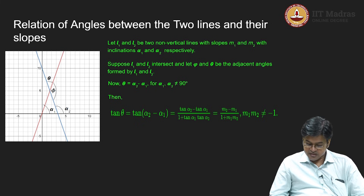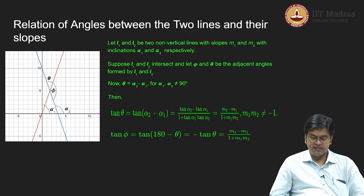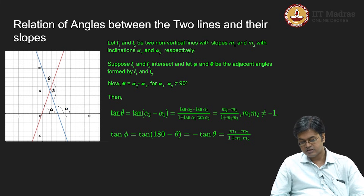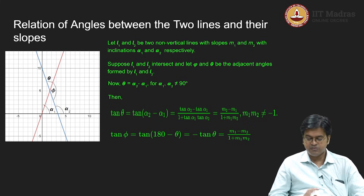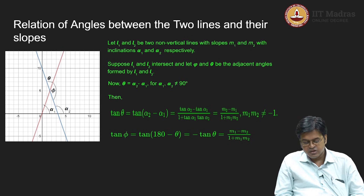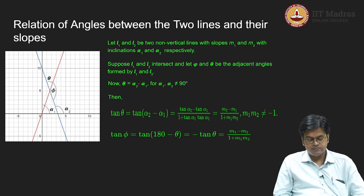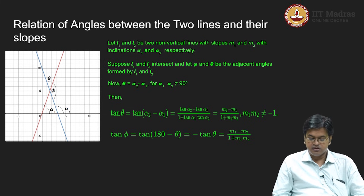So I know what tan(theta) is. The angle phi equals 180 minus theta, so tan(phi) equals tan(180 minus theta), which equals minus tan(theta). Therefore m2 minus m1 is swapped to m1 minus m2, the denominator remains the same, and the condition m1·m2 not equal to minus 1 holds because the lines are not perpendicular. This finishes our discussion on the angle between two lines.